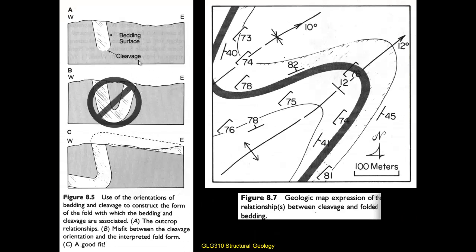In the field, where we see some layering and a bit of bedding with cleavage, we could establish axial planar cleavage and infer what the fold probably looks like. In a map view, the fold is plunging to the upper right, with bedding shown by typical symbology. The bracketed strike and dip symbols show cleavage orientation, which is pretty much uniform, dipping fairly steeply to the southeast, cutting across these folds consistently.